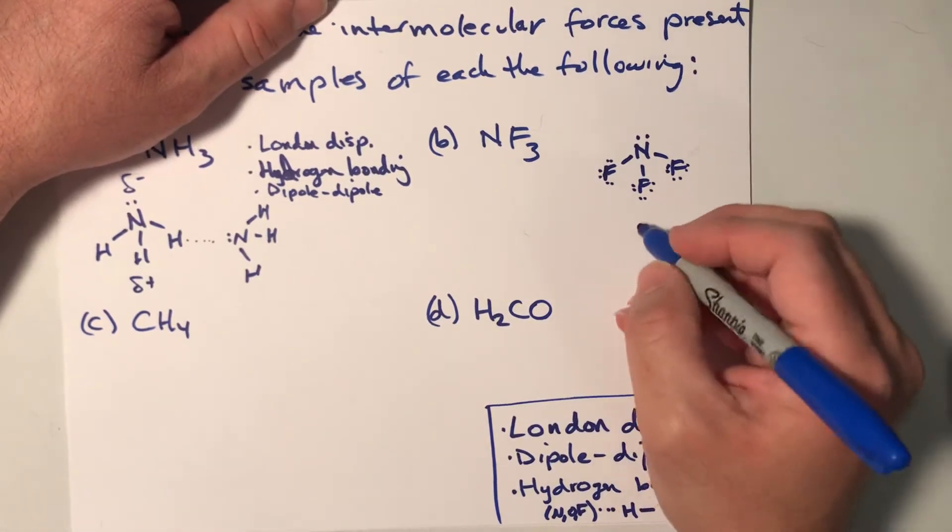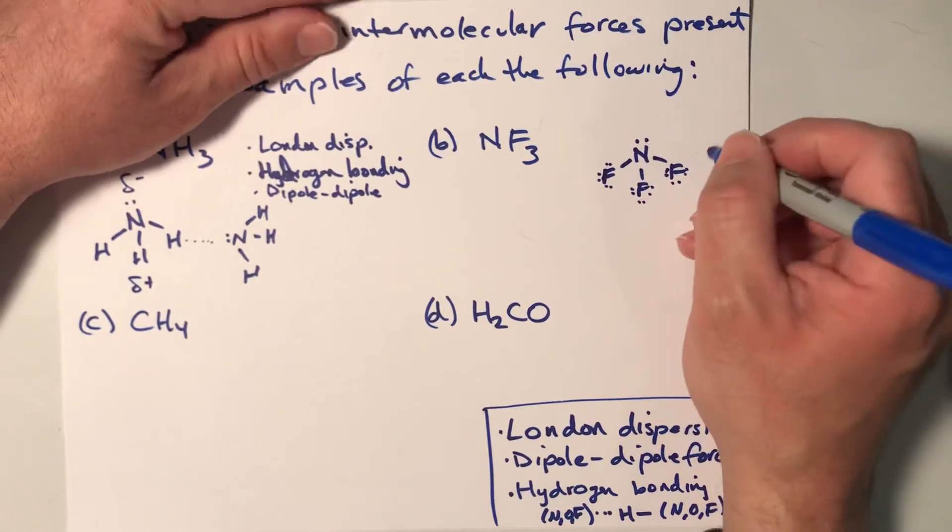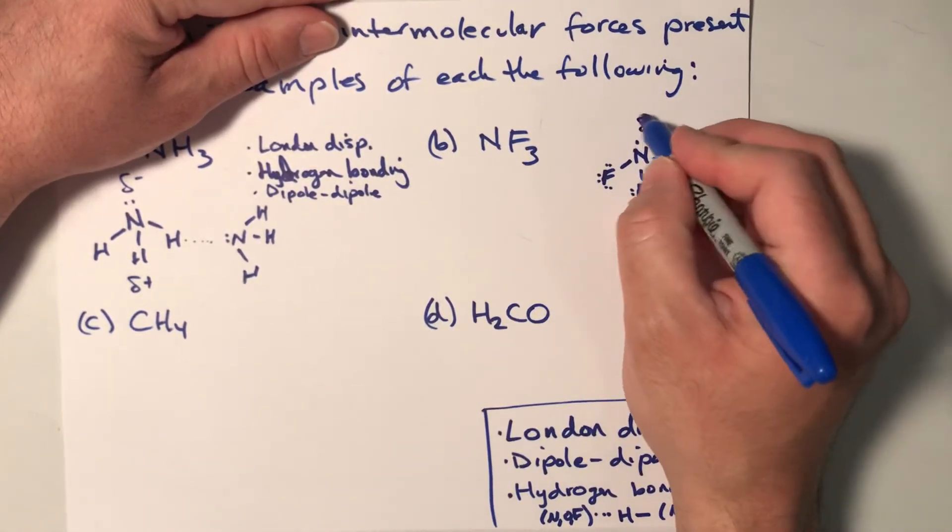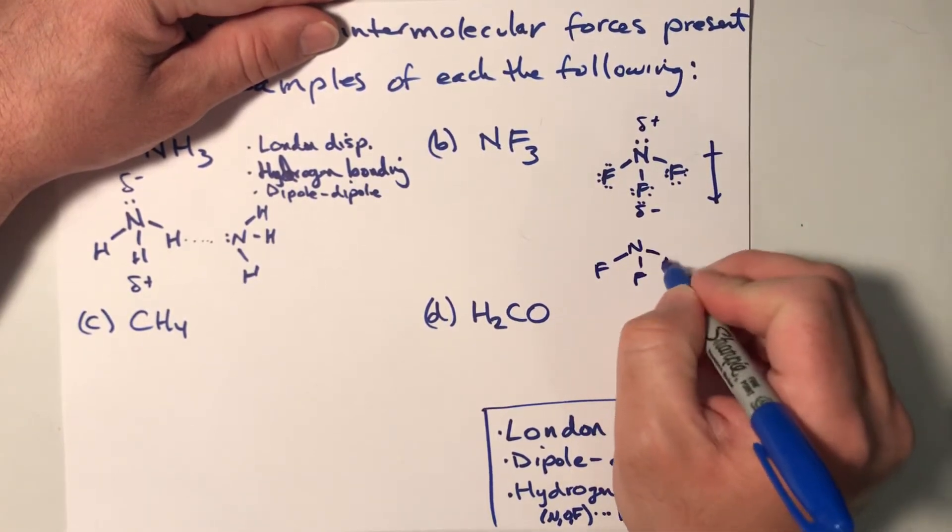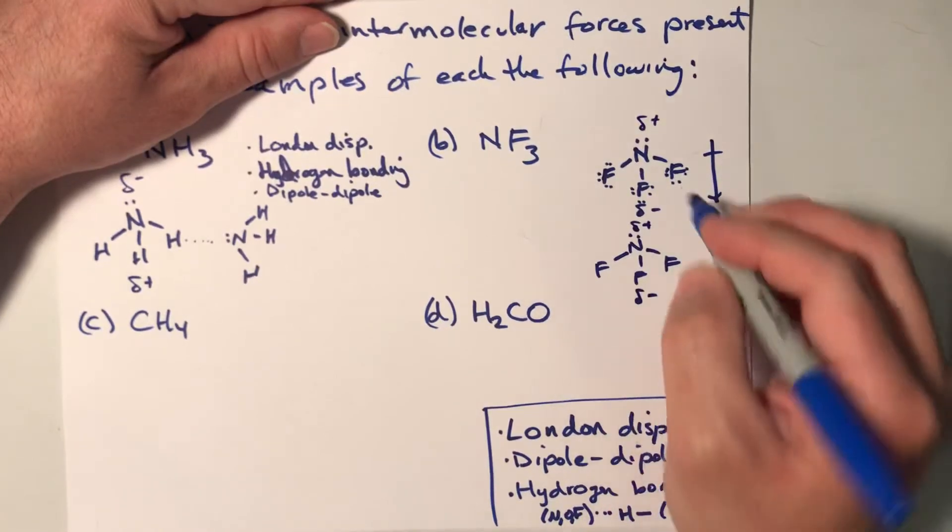So if you have, remember the fluorines are more electronegative than the nitrogen, so the dipole points this way. So you have a small negative here and a small positive here. And a neighboring NF3 would have a small positive and a small negative.